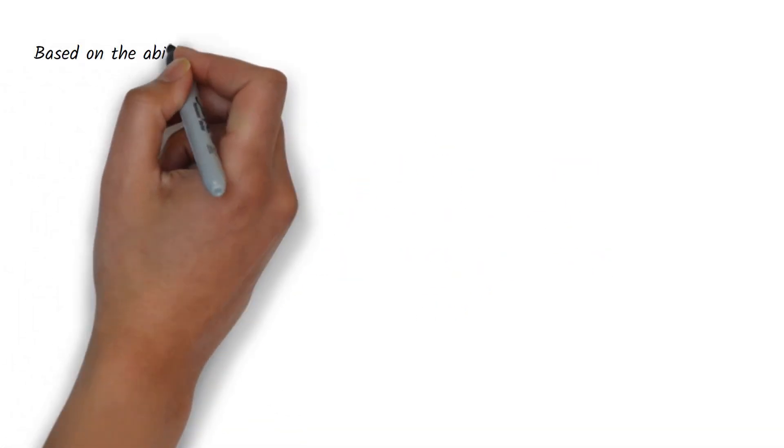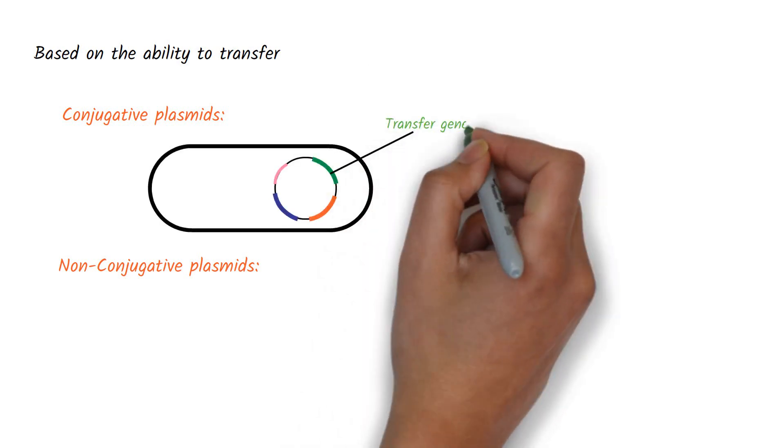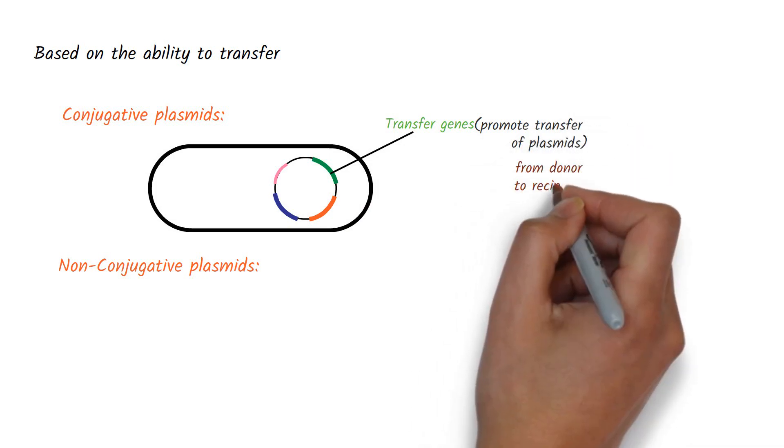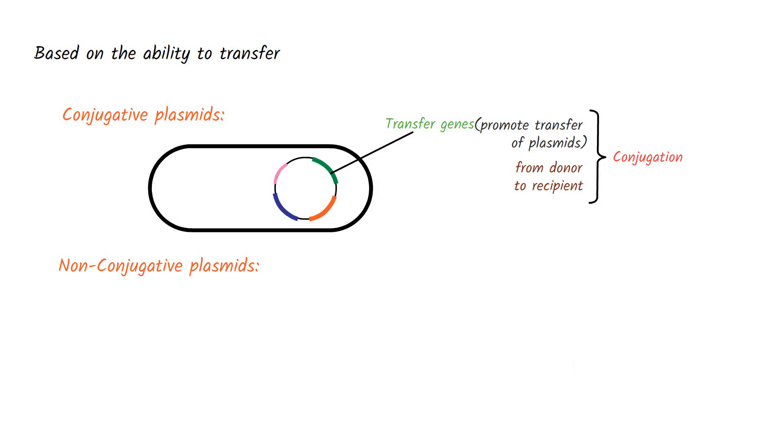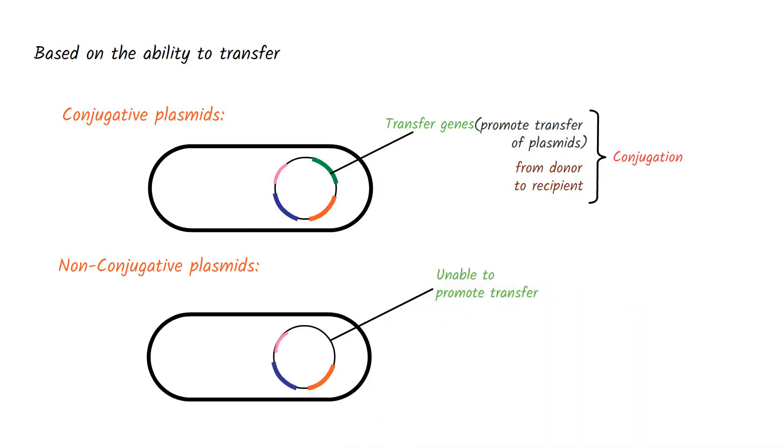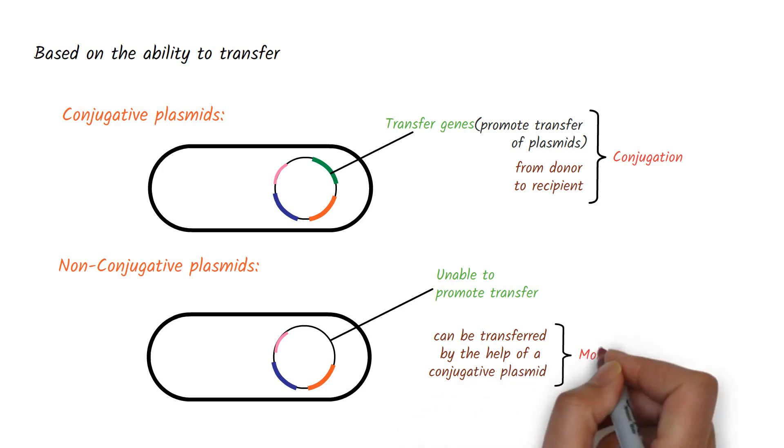Based on the ability to transfer from one cell to another cell, plasmids are classified as conjugative plasmids and non-conjugative plasmids. Conjugative plasmids contain transfer genes that promote transfer of plasmids from the donor cell to recipient cell by a process called conjugation. A non-conjugative plasmid is unable to promote transfer during conjugation. However, a non-conjugative plasmid can be transferred by the help of a conjugative plasmid through a process called mobilization.